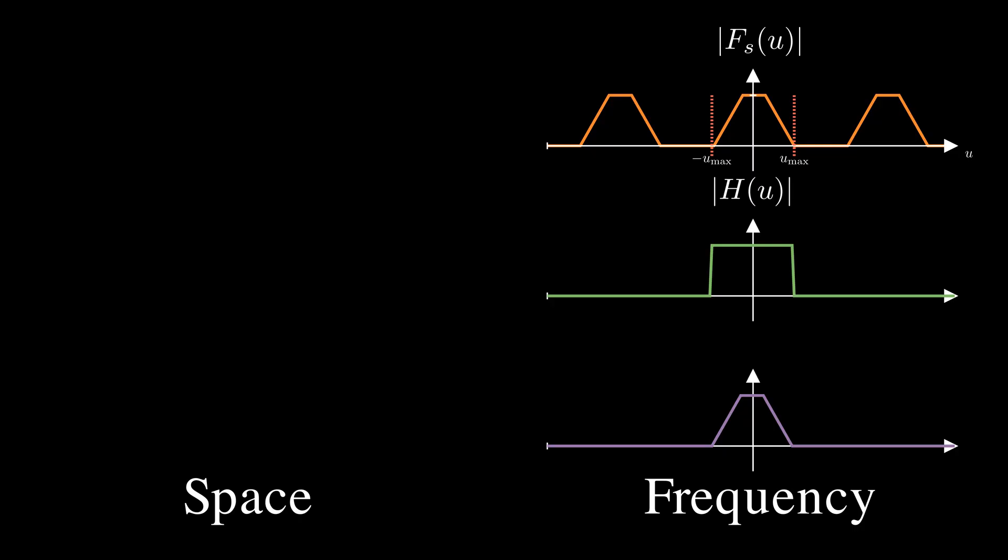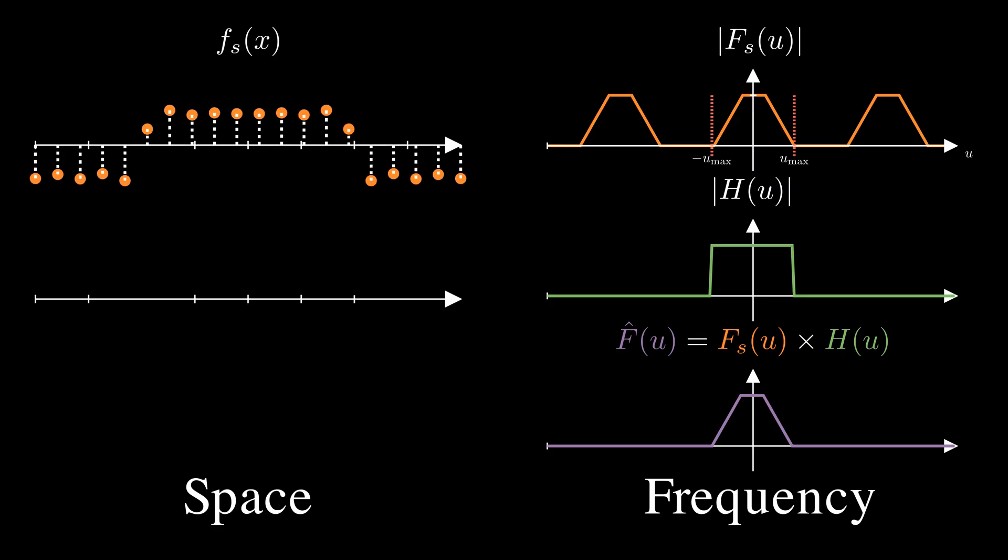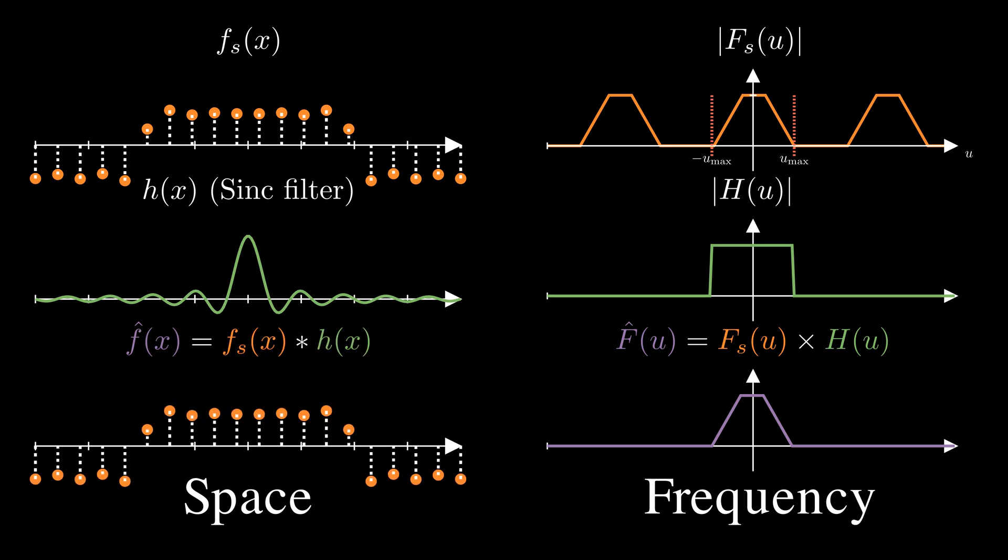From the convolution theorem, we know that multiplication in the frequency domain corresponds to convolution in the spatial domain. So what function in the spatial domain corresponds to a rectangle cutoff in the frequency domain? It's a function with a cool name, the sinc function. By convolving the sinc function with our samples, we can reconstruct original continuous signals.